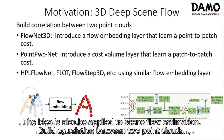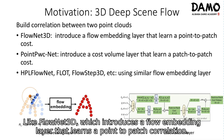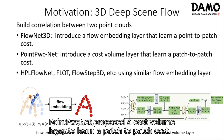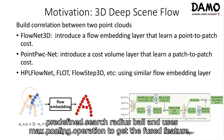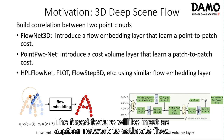This idea is also applied to scene flow estimation by building correlation between two point clouds. Like FlowNet3D, which introduces a flow embedding layer that learns a point-to-patch correlation. Similarly, PwCNet proposed a cost volume layer to learn a patch-to-patch cost. As the figure shows, the flow embedding layer calculates correlation info in a predefined search radius ball and uses max pooling to get the fused feature, which is then input to another network to estimate flow.